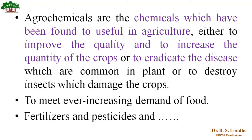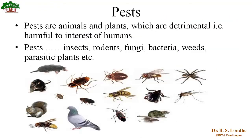Fertilizers, pesticides, and a number of chemicals are used in agriculture. Before going to pesticides, let us understand the meaning of the term pest. Pests are animals and plants which are detrimental, that is harmful, to the interests of humans. Naturally they are not harmful, but as far as our interest is concerned they are harmful, as they decrease the quality as well as quantity of the crop that we are growing in agricultural fields.